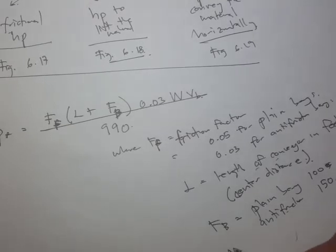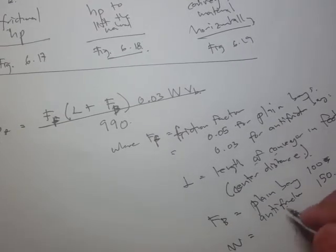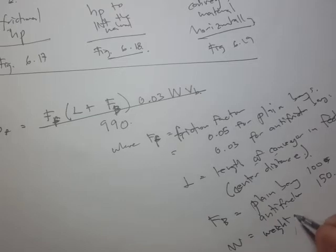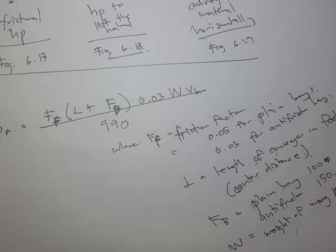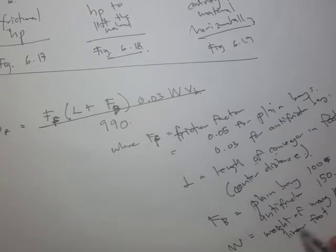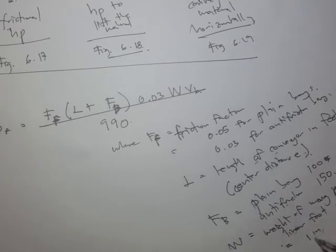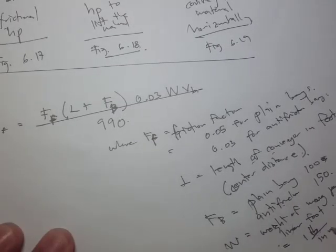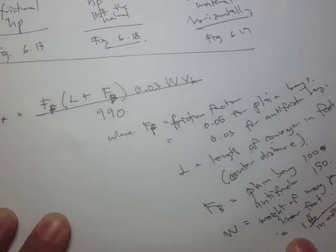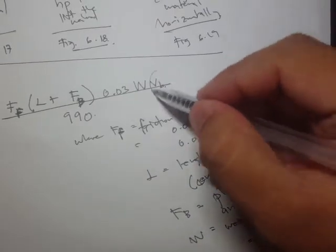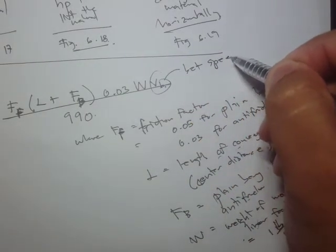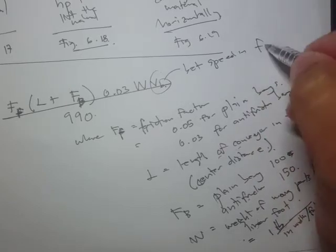The weight W equals one pound per inch of belt width per foot. V_b is the belt speed in feet per minute. The denominator is 990.